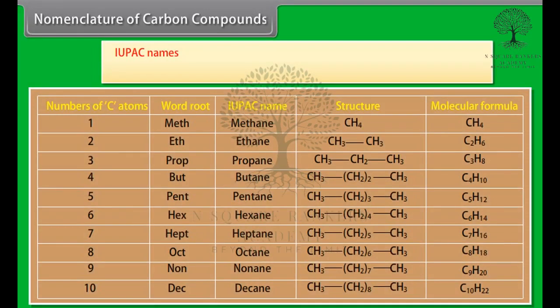IUPAC names. Carbon compounds now need to be named in a more systematic way. A committee called the International Union for Pure and Applied Chemistry, IUPAC, put forward a system of giving scientific names to carbon-based compounds. These names followed all over the world and are called IUPAC names.